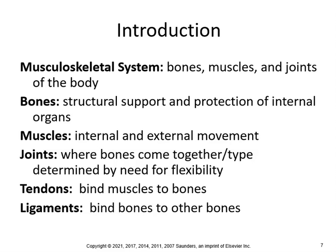Bones provide structural support and protection of internal organs. Muscles allow internal and external movement. Joints are where two bones come together — the type is determined by the need for flexibility. Tendons attach or bind muscles to bone, while ligaments bind bones to bones. You sprain ligaments — like spraining your ankle — but you strain muscles, like straining your back.